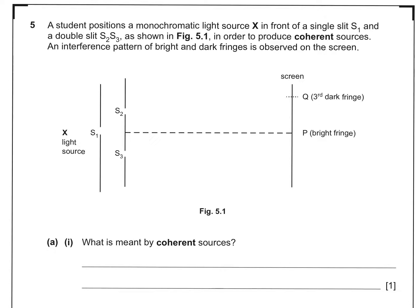An interference pattern of bright and dark fringes is observed on the screen. Question A1: What is meant by coherent sources? That's just straight book work from your notes. Waves from coherent sources have a constant phase relationship.